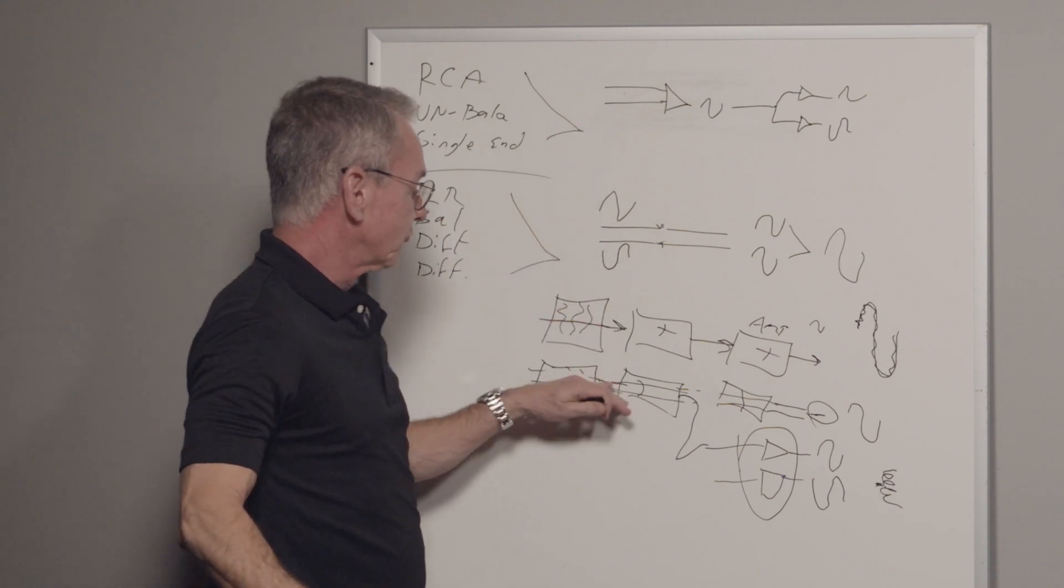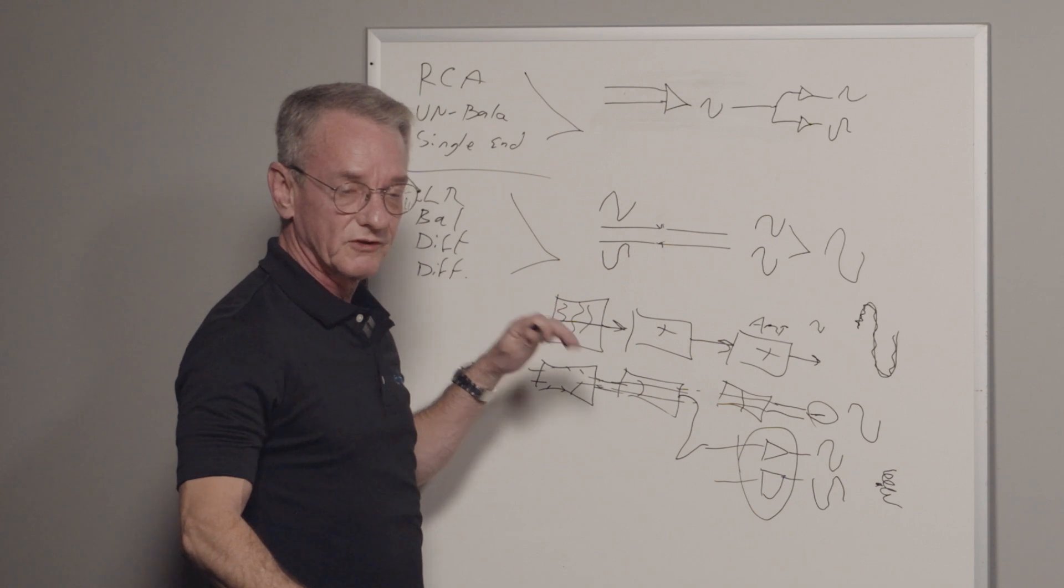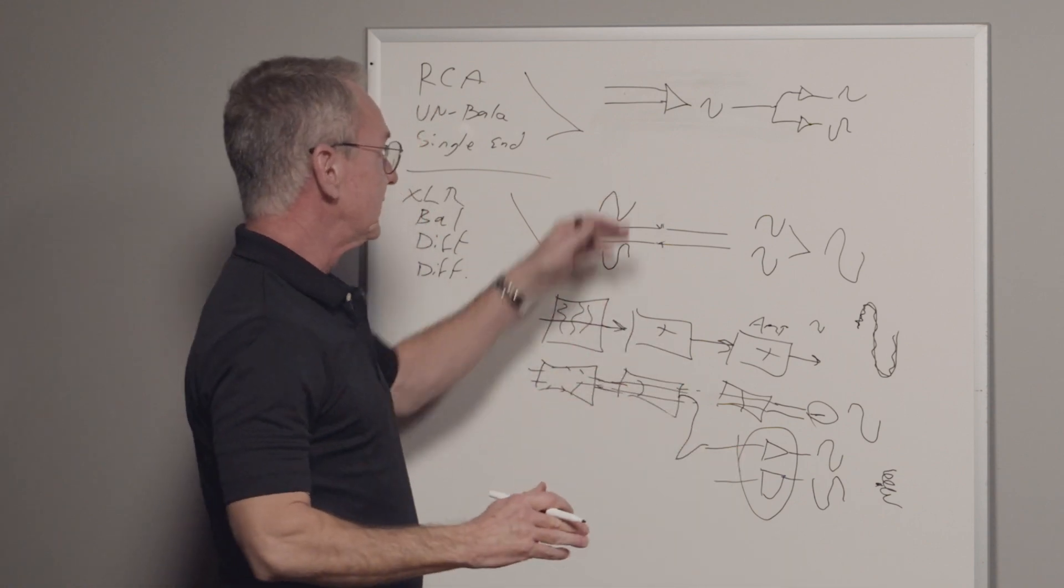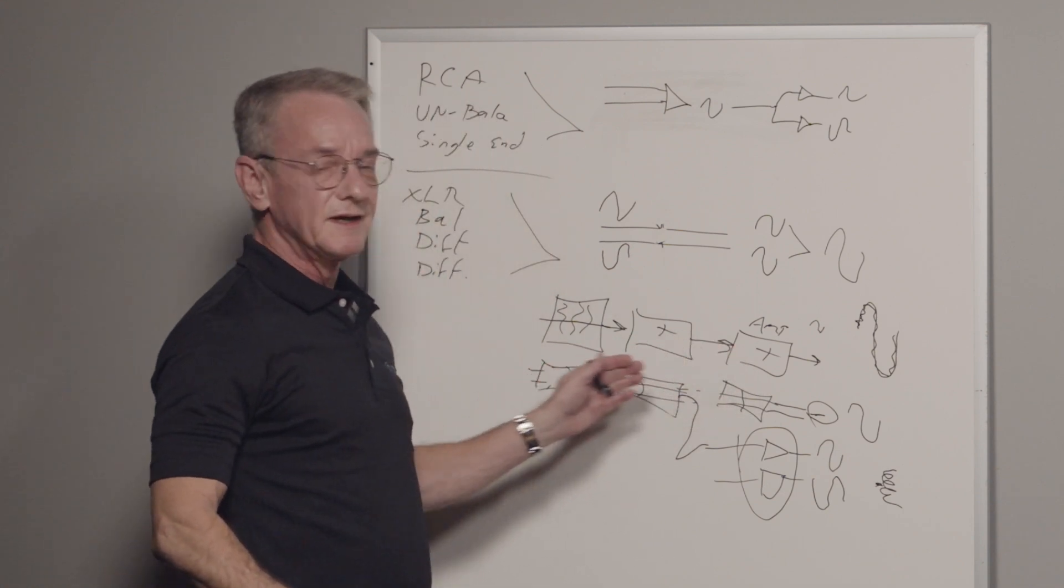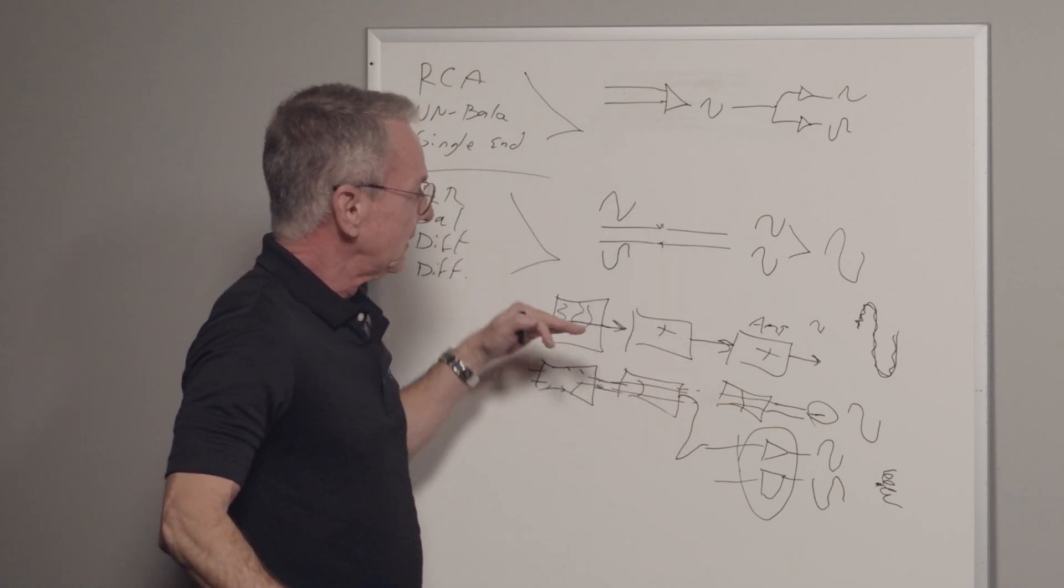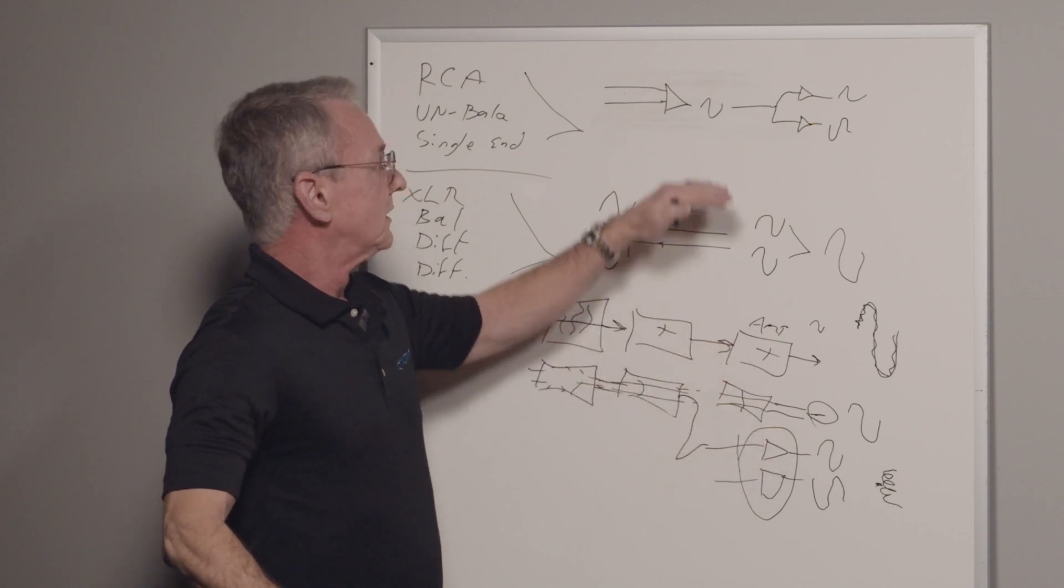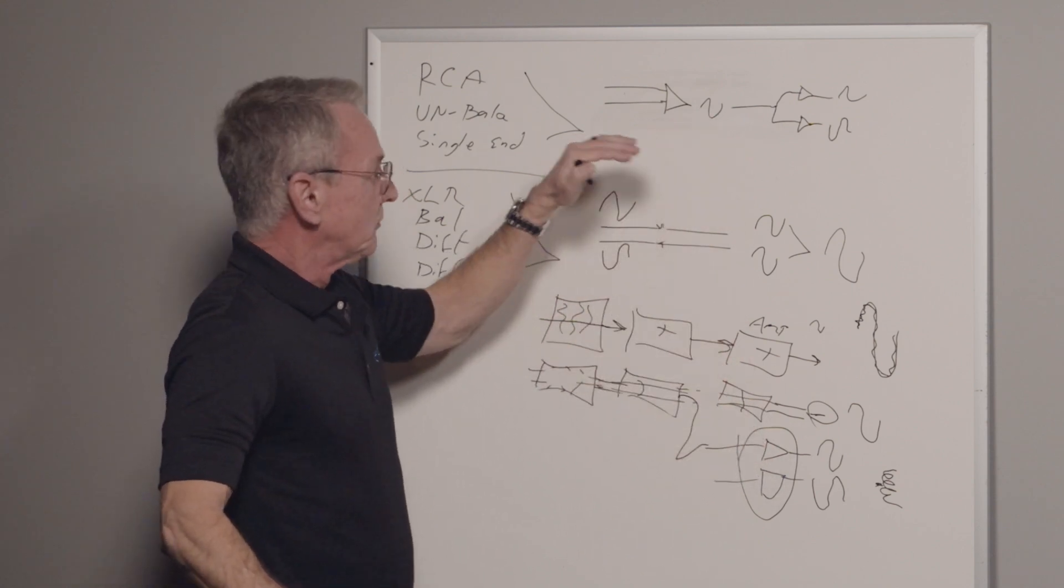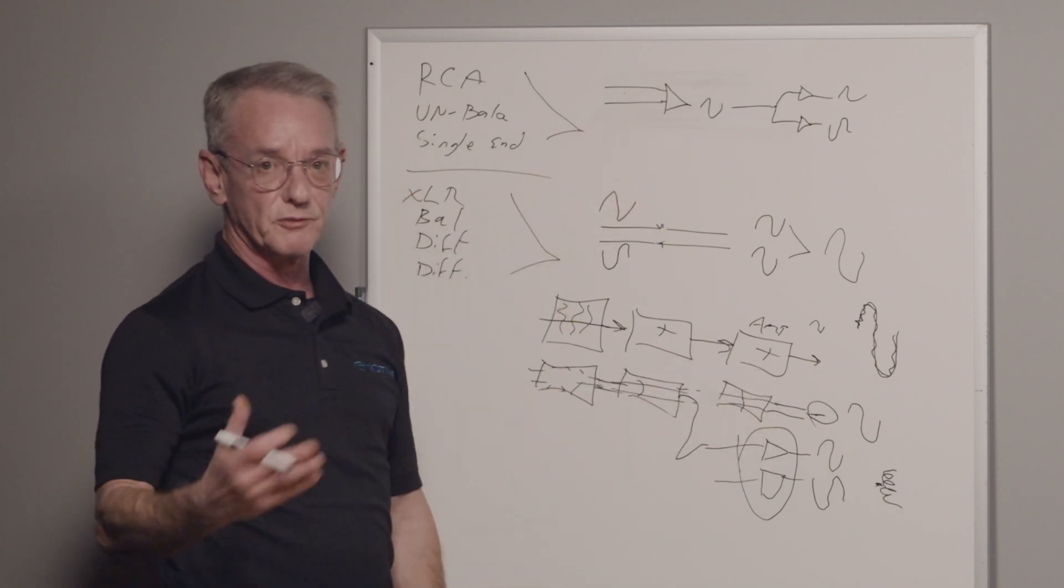The reason they do it is cost. When you run a truly balanced differential system, like we do, when we say our gear is differential reference, that means when it comes in, it stays balanced all the way through from in to out. When you do that, then you get the full benefit of what a truly differential system does. Doing it this way is cheaper because to do a true balanced all the way through means double the parts.